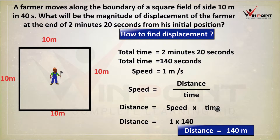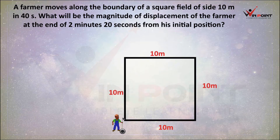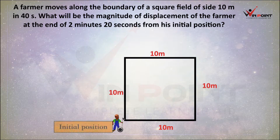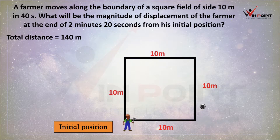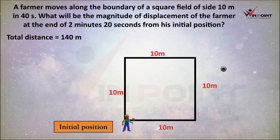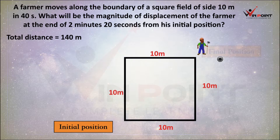Now we can find the final position. We assume the corner of the field is the initial position of the farmer, and this farmer is moving a distance of 140 meters: 10, 20, 30, 40 — one round over. 50, 60, 70, 80 — two rounds over. 90, 100, 110, 120, 130, 140 — this is now the final position after completion of 140 meters.